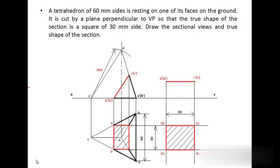The next question: a tetrahedron of 60 mm sides is resting on one of its faces on the ground. It is cut by a plane perpendicular to VP so that the true shape of the section is a square of 30 mm side. Draw the sectional views and true shape of the section. A tetrahedron is similar to a triangular pyramid but with all four triangular faces being equilateral triangles. The height of the tetrahedron is not given — only the side length is given — but the height can be found geometrically.